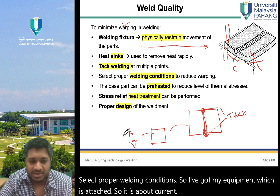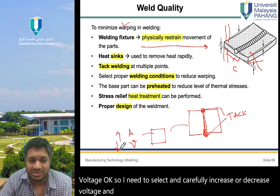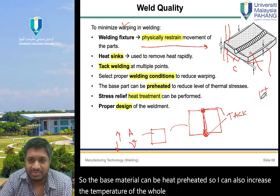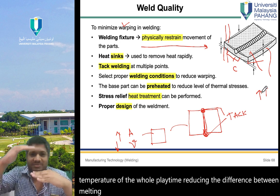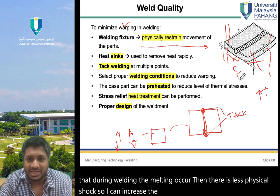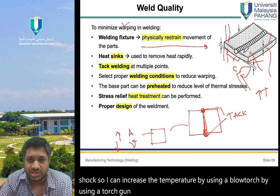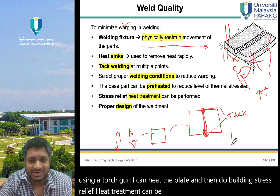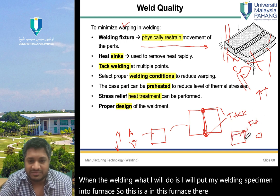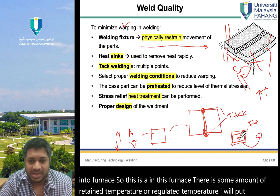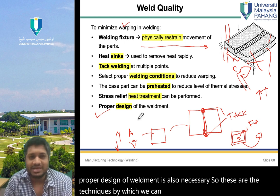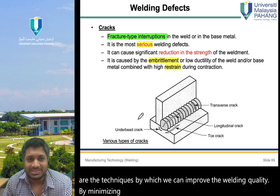You should select proper welding conditions — carefully adjusting current and voltage according to the welding specification. The base material can be preheated using a blow torch to reduce the difference between the melting point and base material temperature, reducing thermal shock. Stress relief heat treatment can also be performed by placing the welded specimen in a furnace to relieve stresses. Proper design of the weldment is also necessary.